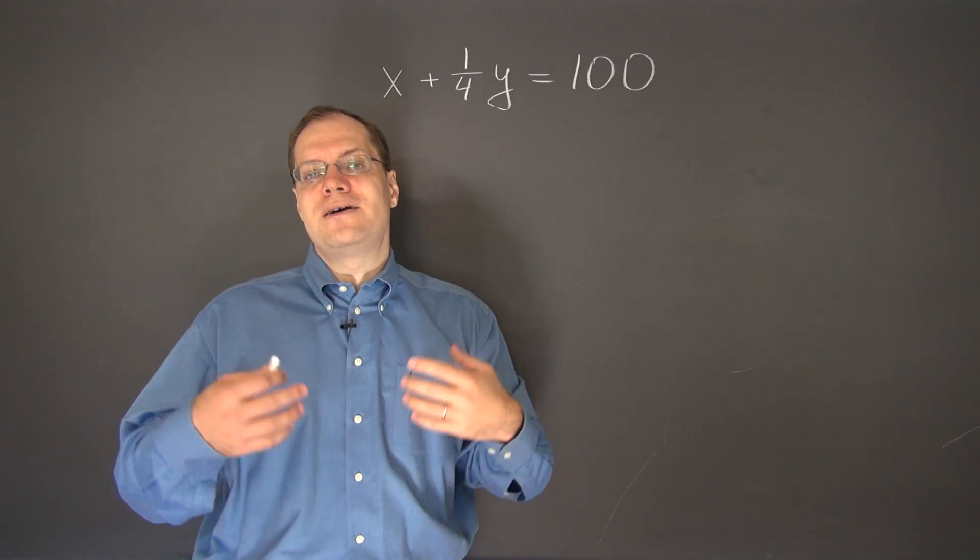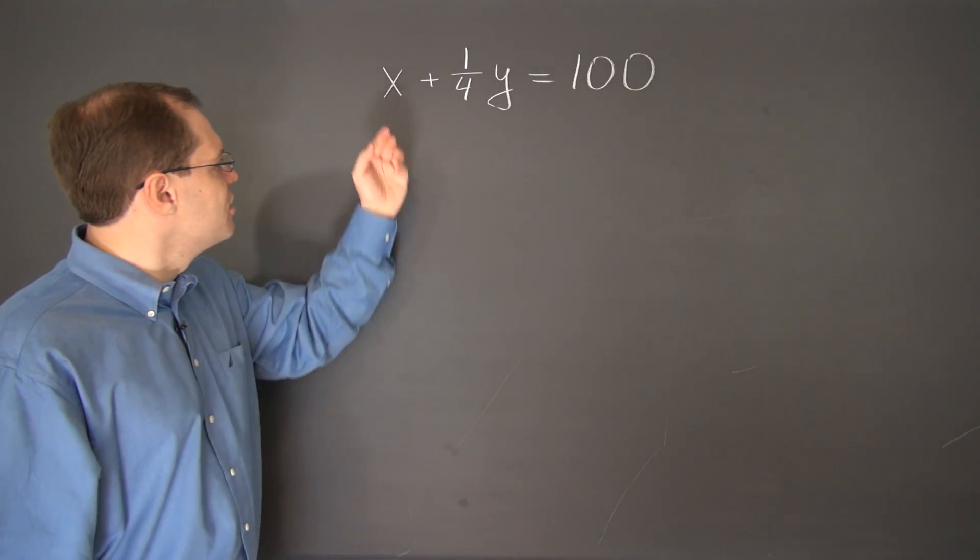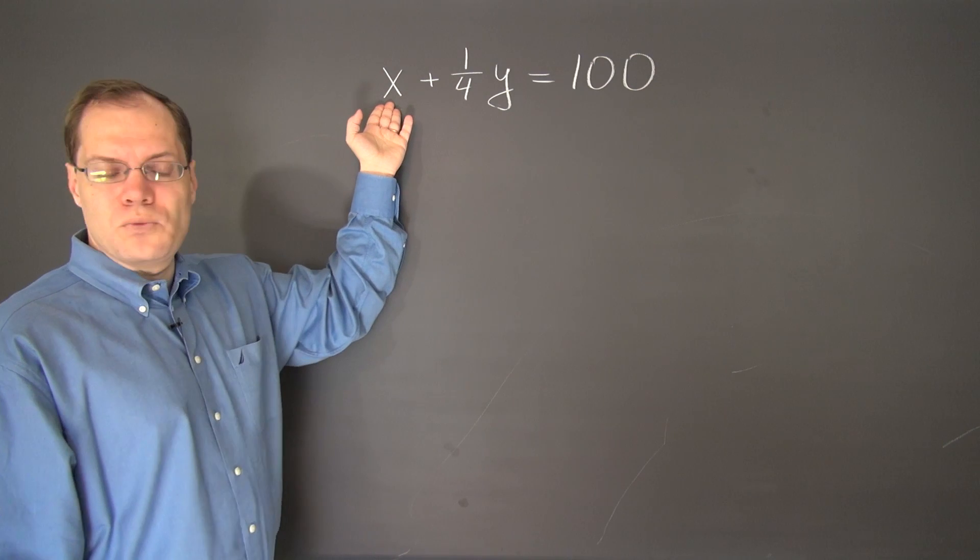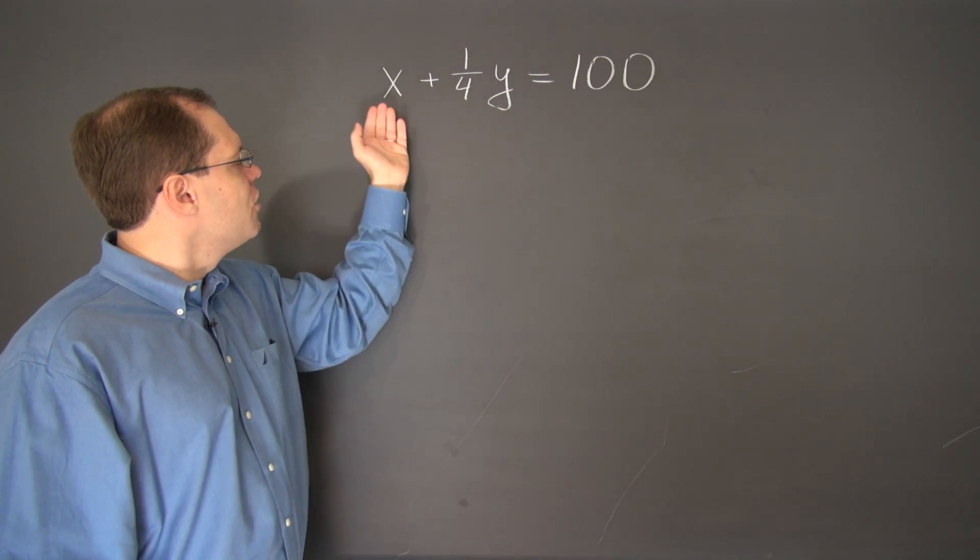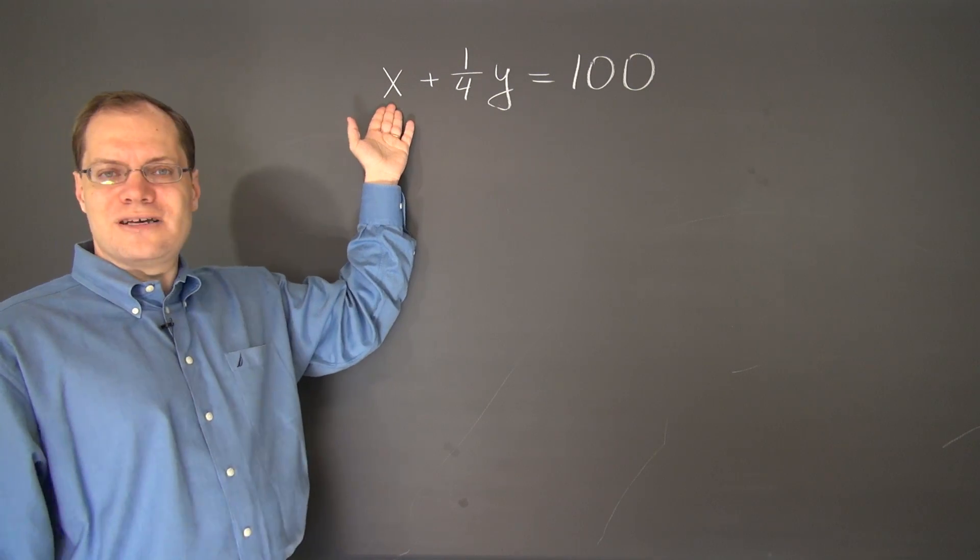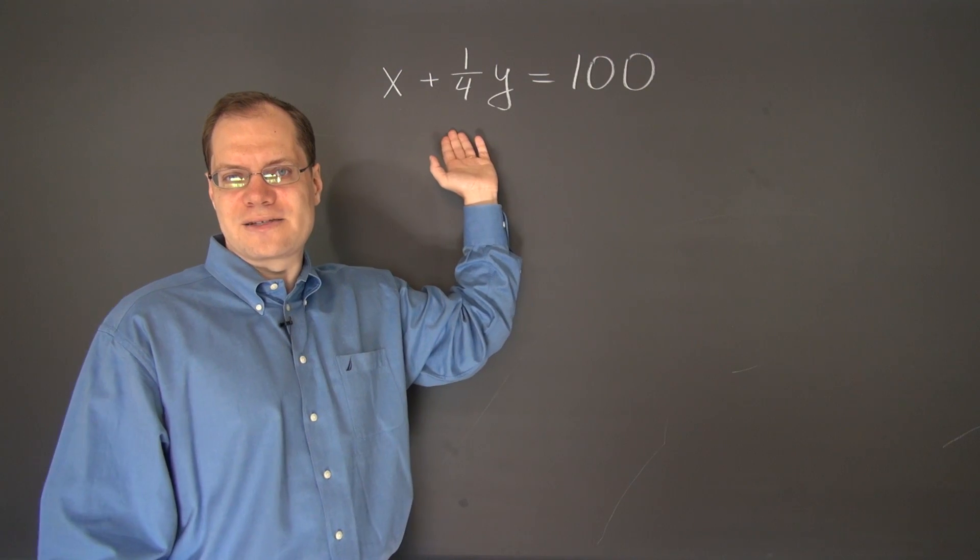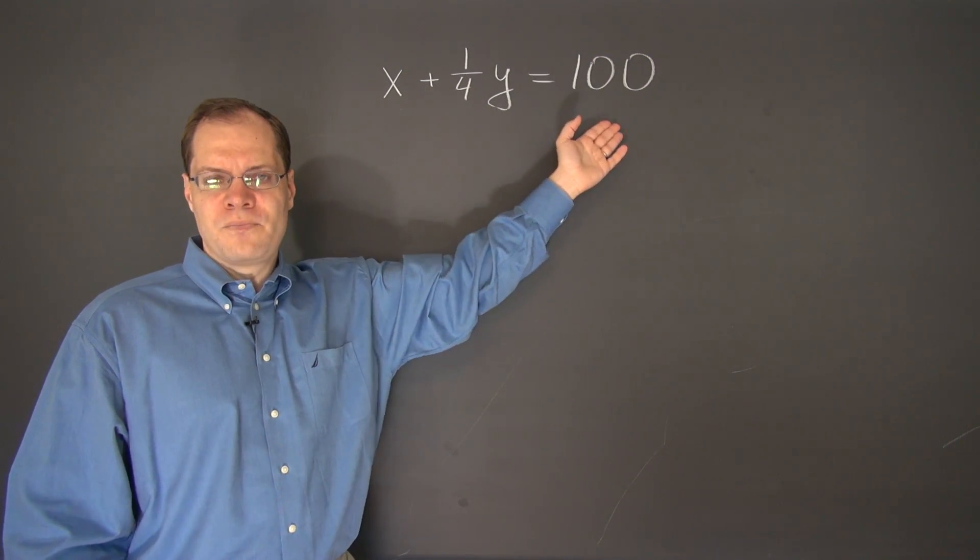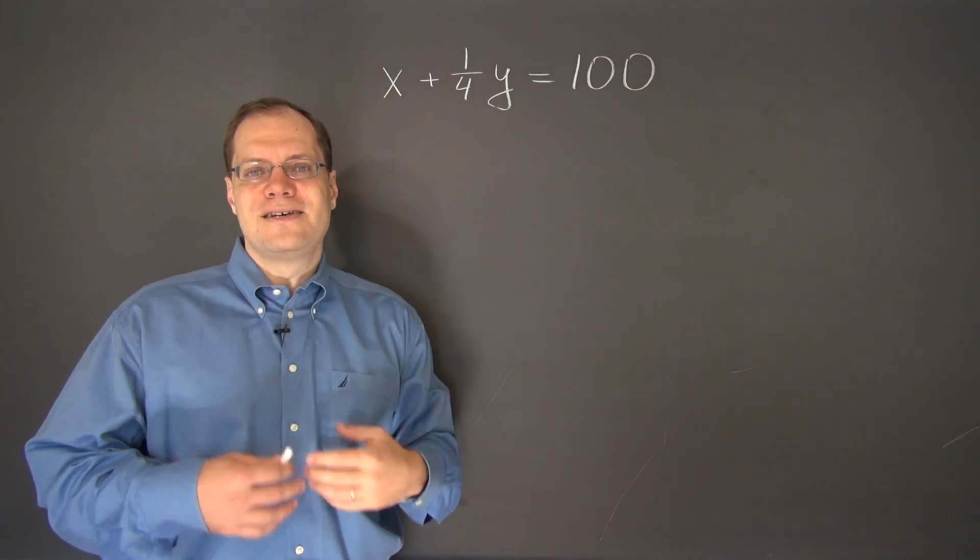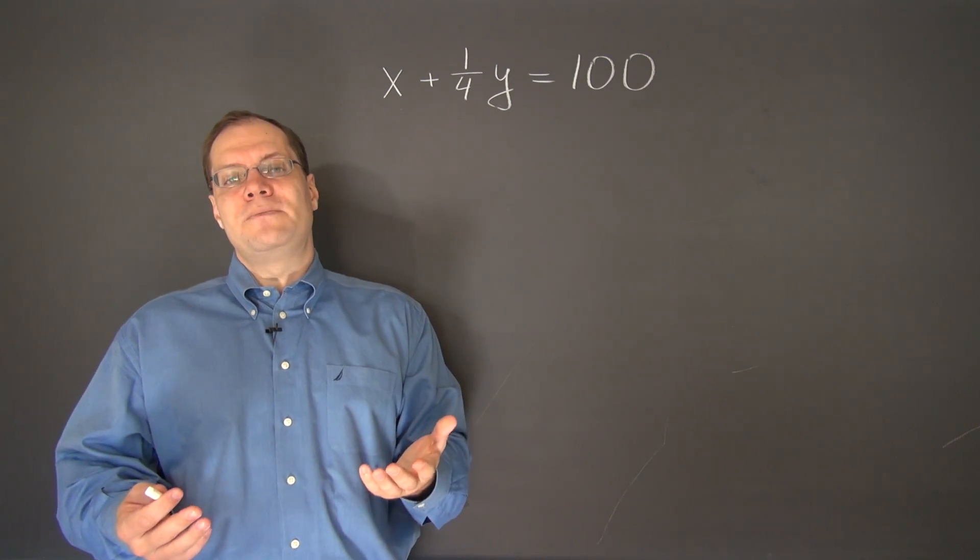Or if you forget where the system came from and allow negative numbers and not necessarily integers, it could have been 101, x could be 101 and y could be minus 4, or x could be 101.5 and y could be whatever corresponds to that value of x. So there are infinitely many solutions. Let's see how we would analyze this very simple problem from the point of view of the framework that we have been developing.